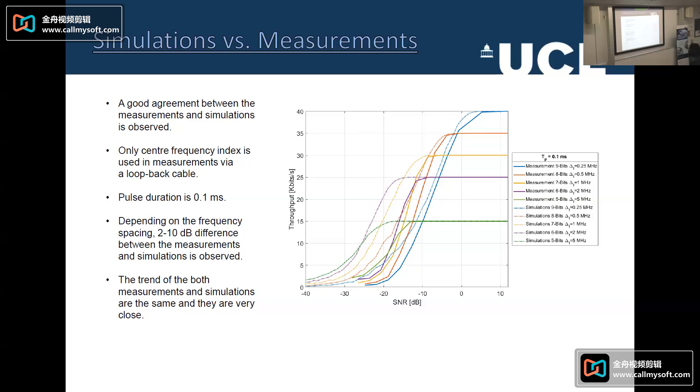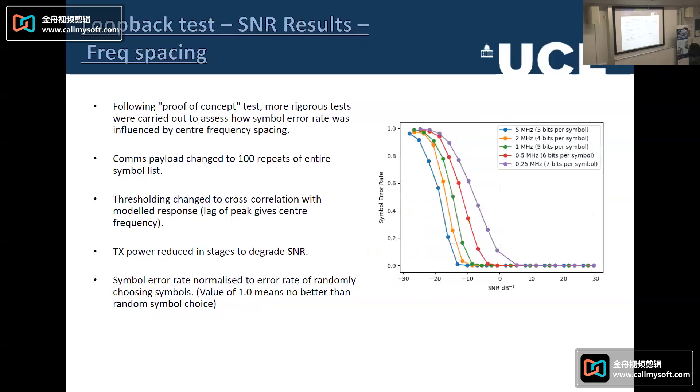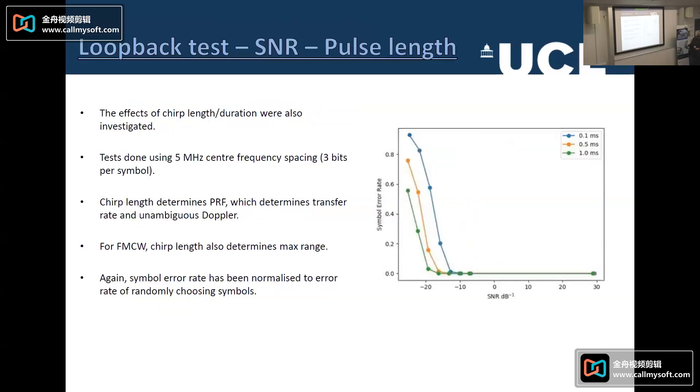Proof of concept, more rigorous tests were carried out, and how the symbol error rate influenced by central frequency spacing was investigated. So this was 5 megahertz spacing down to a quarter megahertz. And our symbol error rates here, you can see for the purple line, these errors started creeping up much earlier as SNR was being reduced. And in this other case here, when we had different length pulses, the shortest pulses had the similar error rate starts again occurring earlier. The longer pulses, higher amount of energy, easier to correctly estimate those.